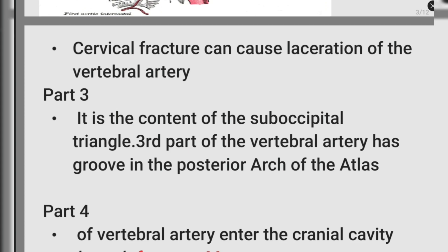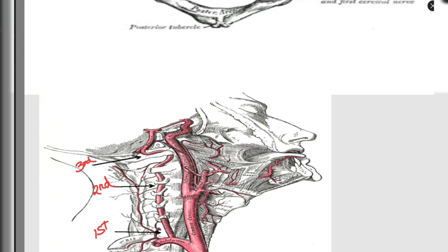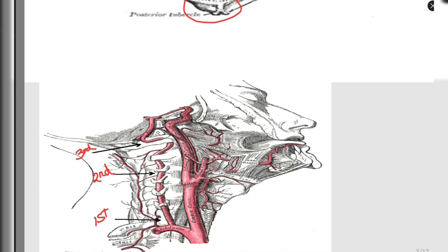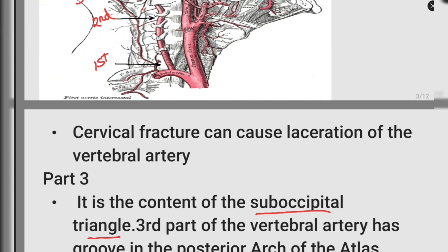Part three of the vertebral artery is a content of the suboccipital triangle. It has a groove in the posterior arch of the atlas. The third part of the vertebral artery has a groove in the posterior arch. This is the posterior arch of the atlas, and here it has the groove. This is also where the foramen transversarium of the cervical vertebra is located.